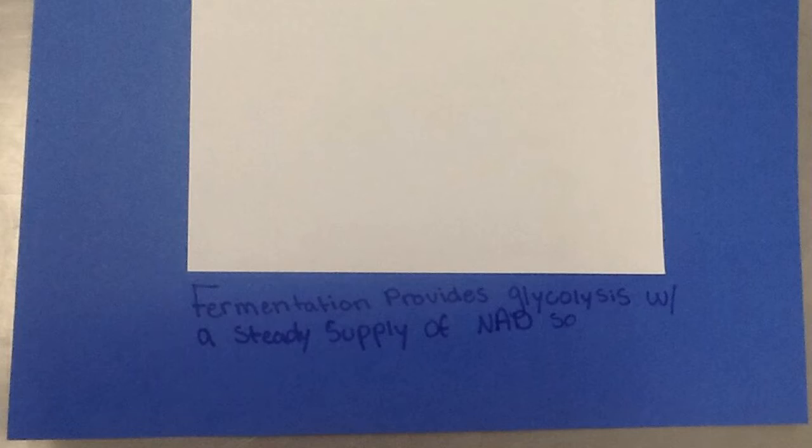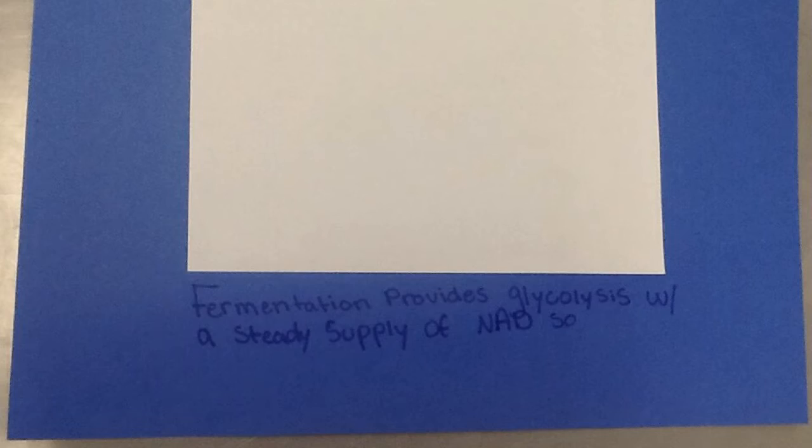Fermentation allows glycolysis to continue when there is no oxygen. Fermentation provides glycolysis with a steady supply of NAD so it will be able to produce ATP.